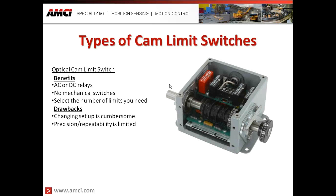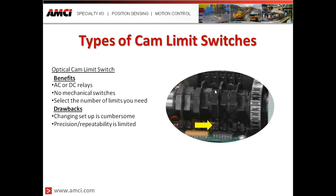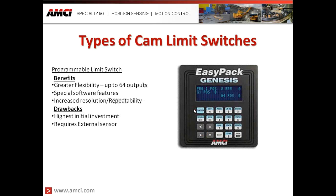The second option is an optical cam limit switch. You can select outputs based upon the type of loads you're switching, whether AC or DC. There are no mechanical switches, so no components to wear out. Just like the mechanical unit, you can select the number of limits you need. The drawback is that setup is cumbersome — you still need a wrench to adjust those lobes for on/off points, and precision and repeatability of the system is limited.